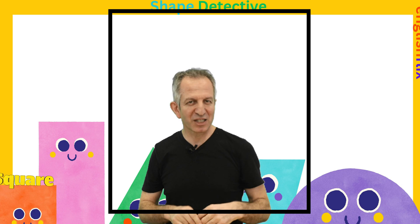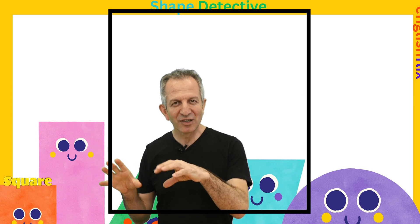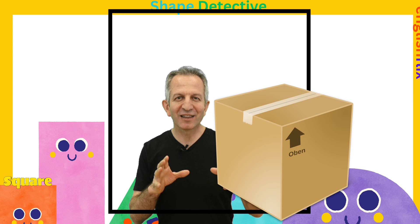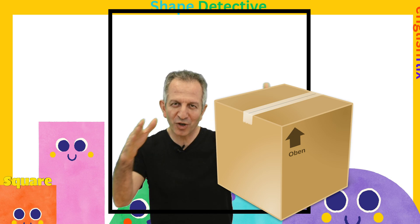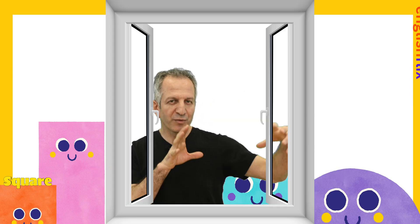Square. Four equal sides, four straight corners — like a box, a window, or your book.